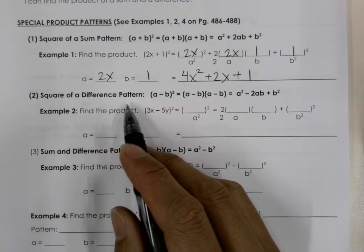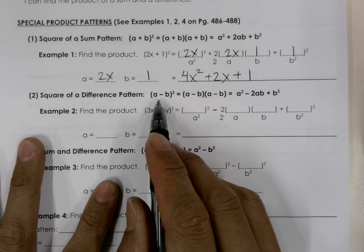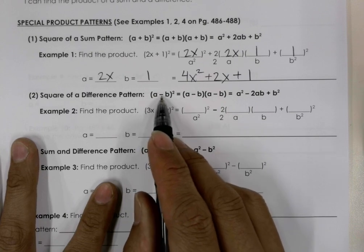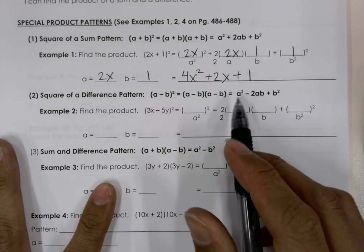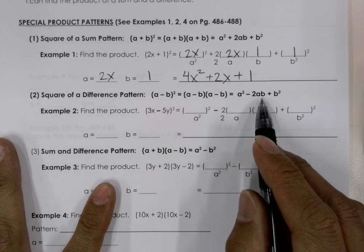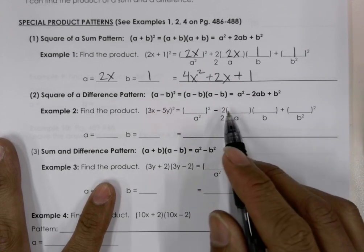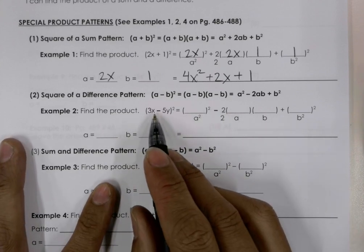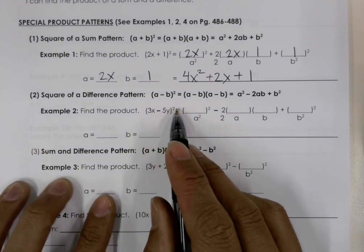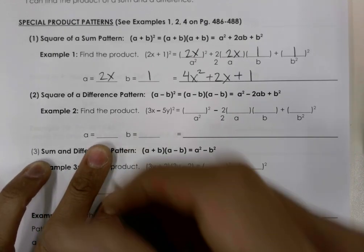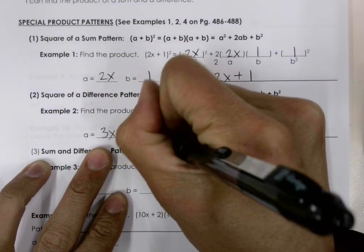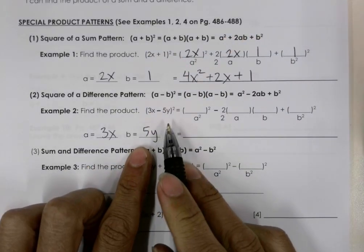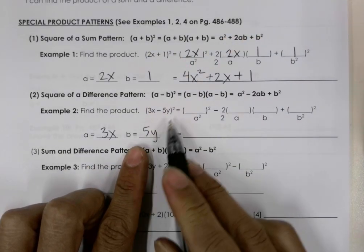Here we can find the square of a difference pattern. So you see it's not a + b, it's (a - b)². It follows the same format, the same pattern, except this is minus 2ab as your center term. So if this is our problem, (3x - 5y)², our a is going to be 3x and our b is going to be 5y. Notice it is not negative 5y, it is 5y.